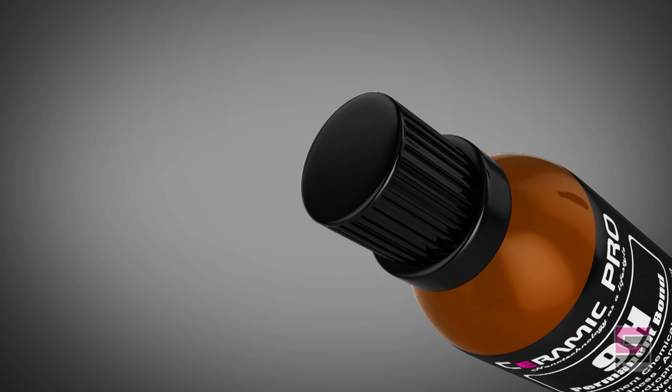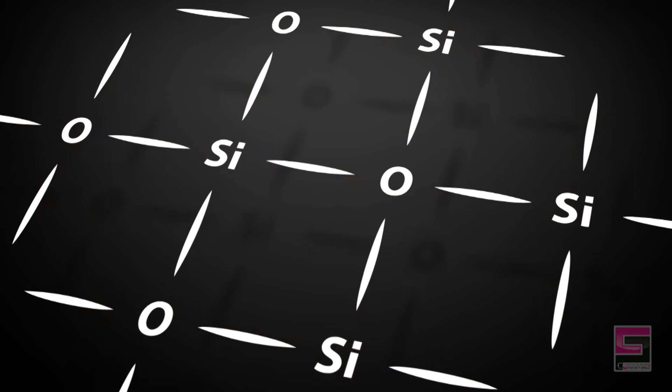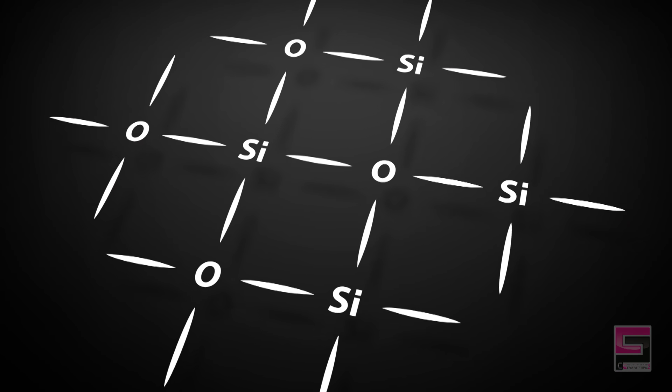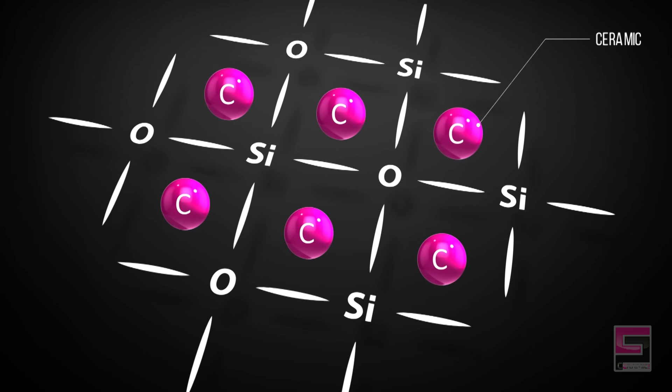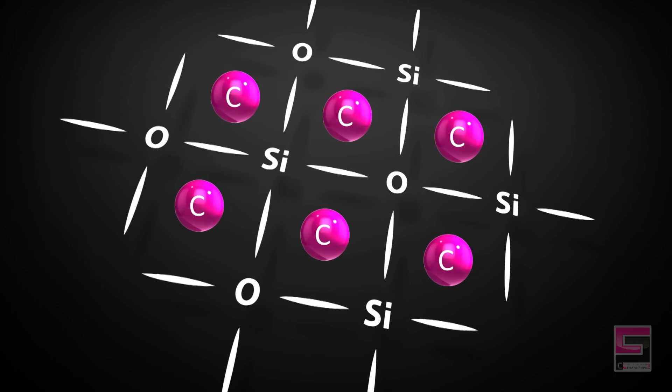Ceramic Pro 9H is the most advanced ceramic nanotechnology permanent protective coating on all automotive surfaces. The advanced 3D matrix technology is used to create a molecular complex with ceramic-based special formulation coating.